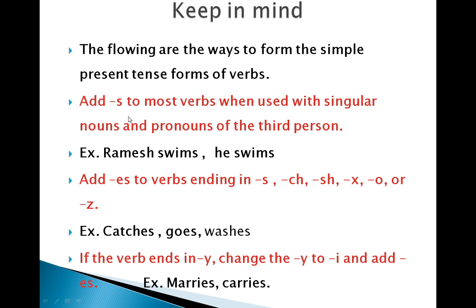If there is a singular noun or pronoun of the third person, you should add 's' to the given verb. For example, 'Ramesh swims' — singular noun, so we add 's'. If we use a pronoun instead, it becomes 'he swims'. When the subjects are 'he', 'she', or 'it', you add 's' to the verb.